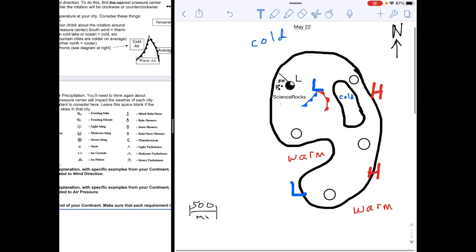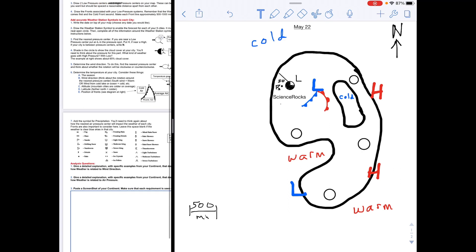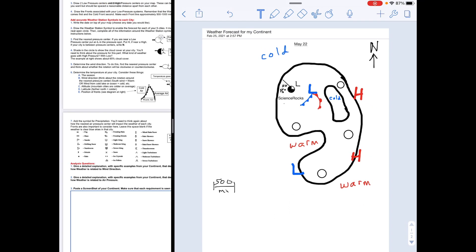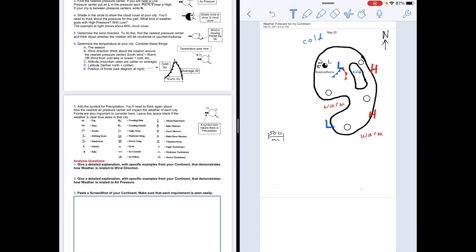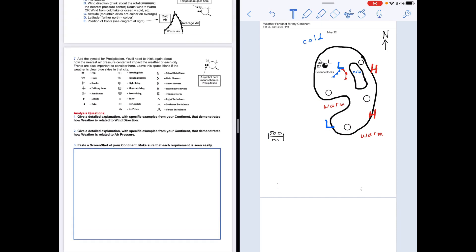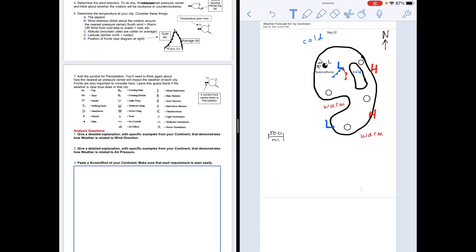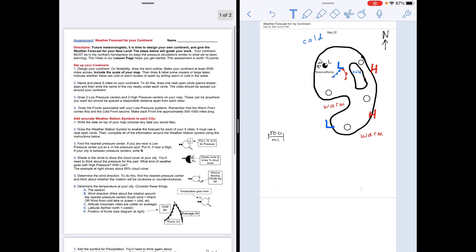So you are going to have to determine the temperatures, the weather station symbols, and then you go through and you do a screenshot of the right-hand side and you're going to put that into this box so that everything can be seen easily. You have two questions to answer with details and specific examples from your continent. Your goal is to show me that you understand weather forecasts based on pressure systems, winds, and bodies of water nearby and how they influence it along with fronts. So good luck.